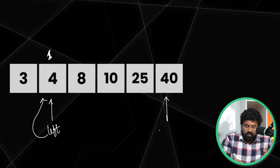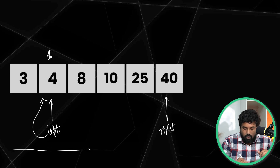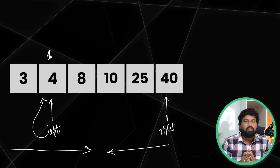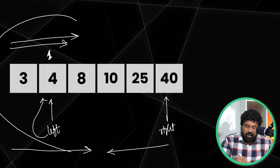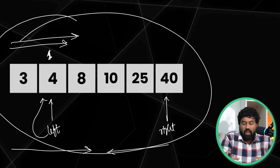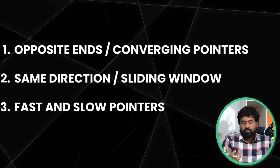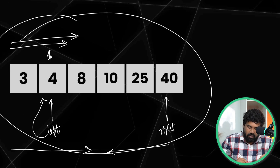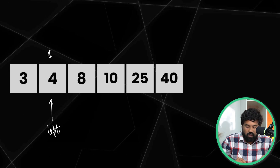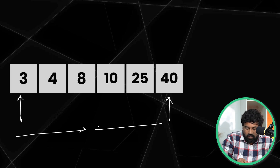In the two pointer algorithm we use two pointers — left and right, or whatever names you prefer, but I suggest left and right. What happens is the left pointer and right pointer can converge towards each other, meaning they travel in opposite directions, or they can travel together in the same direction. There are different techniques based on our problem requirements.